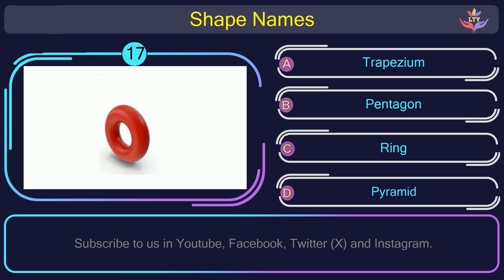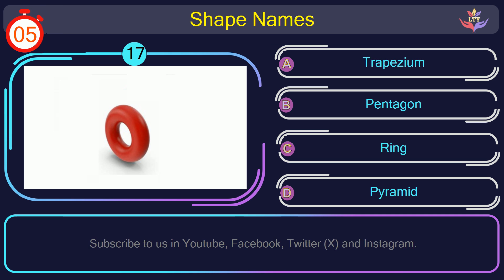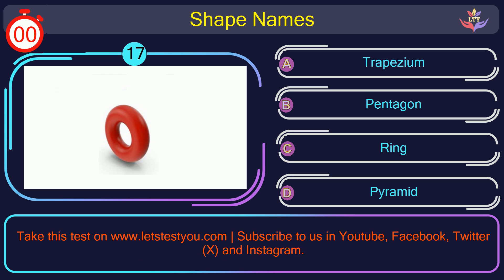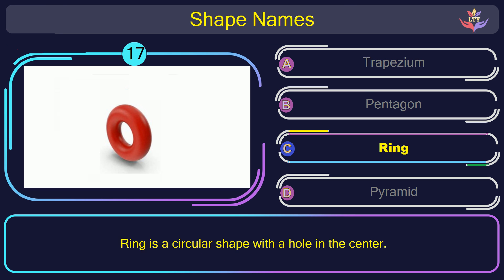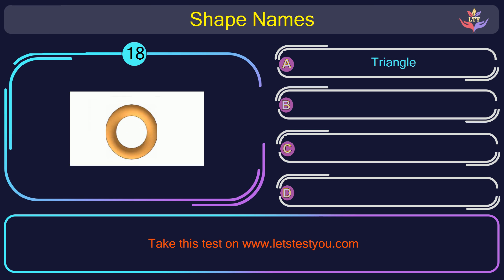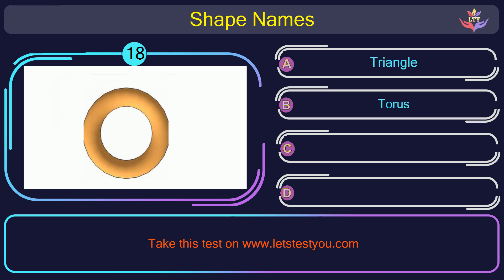Question number 17. Could you recognize the name of the shape in this picture? The correct answer is option C. Ring. Ring is a circular shape with a hole in the center.